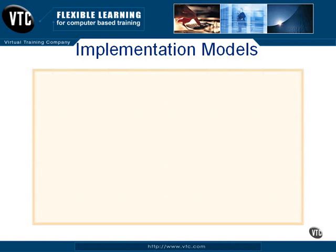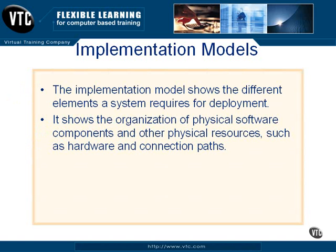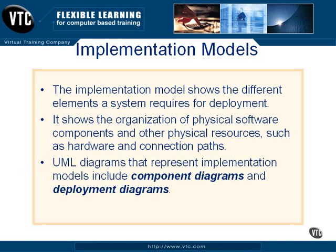Implementation models are a specialized kind of static model. The implementation model shows the different elements a system requires for deployment. It shows the organization of physical software components and other physical resources, such as hardware and connection paths. UML diagrams that represent implementation models include component diagrams and deployment diagrams. You'll often find these classified under static diagrams, because implementation models are a subset of that kind of diagram.